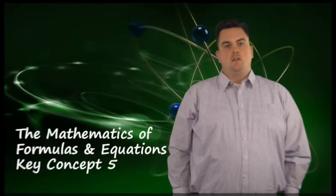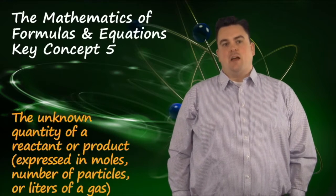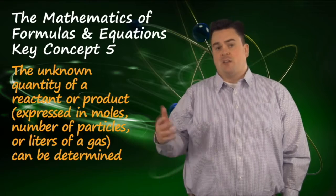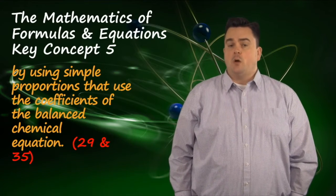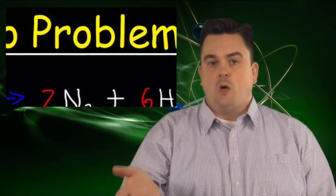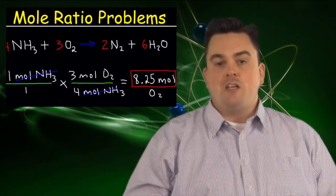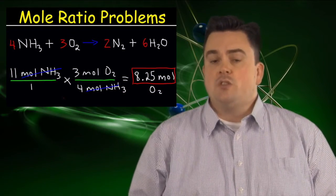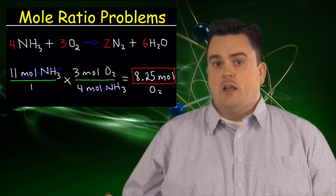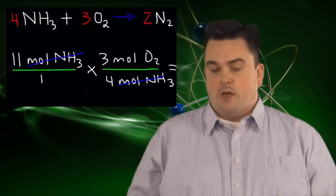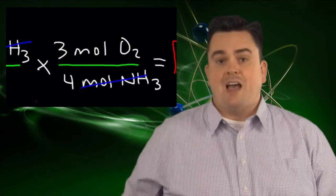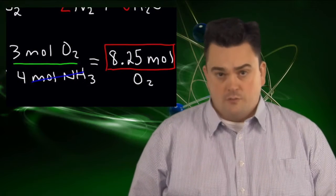The mathematics of formulas and equations key concept five: The unknown quantity of a reactant or product expressed in moles, number of particles, or liters of a gas can be determined by using simple proportions that use the coefficients of the balanced chemical equation. When we need to convert from moles of one substance into moles of another in a balanced chemical equation, we simply use the coefficients to help us do that. In the example, we've got ammonia and oxygen in our balanced equation. We use the coefficients of ammonia and oxygen to get our answer. In this particular example, we are given 11 moles of ammonia and we have to divide by the four moles of ammonia and multiply by the three moles of oxygen to determine our answer of 8.25 moles of oxygen.